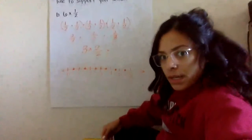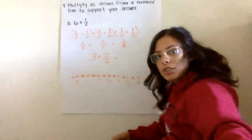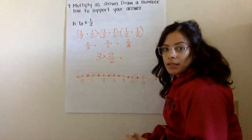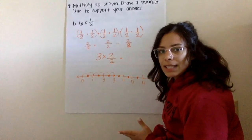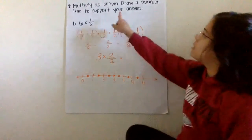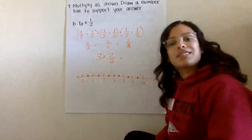So let's look at what that work will look like as we move on to number four. Now you're not adding and subtracting, you're multiplying these fractions. This is a lot of what you did in lesson number 23. So you want to multiply as shown and draw a number line to support your answer.